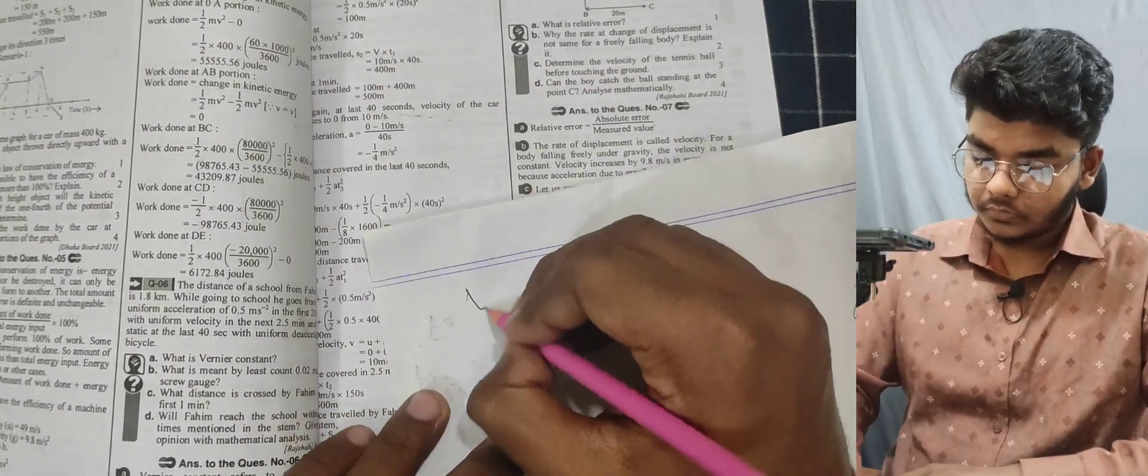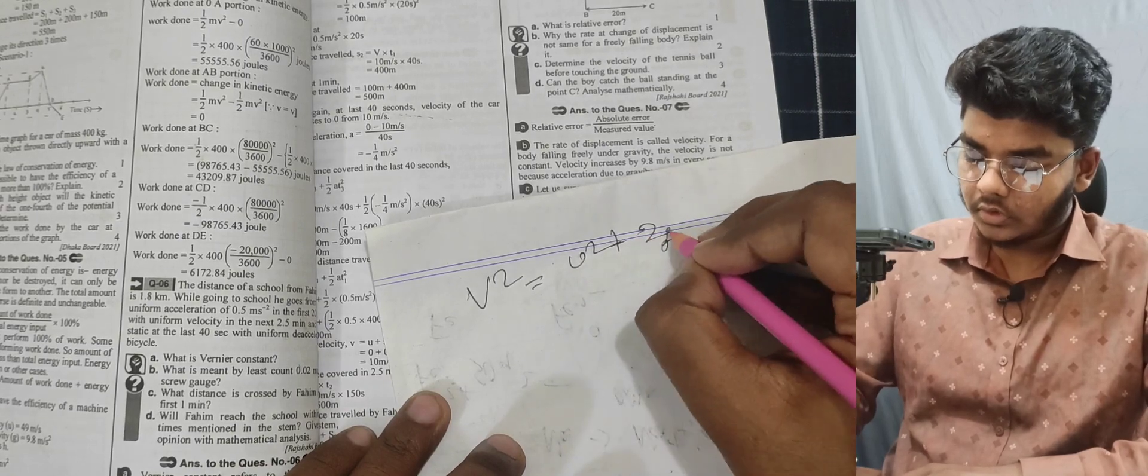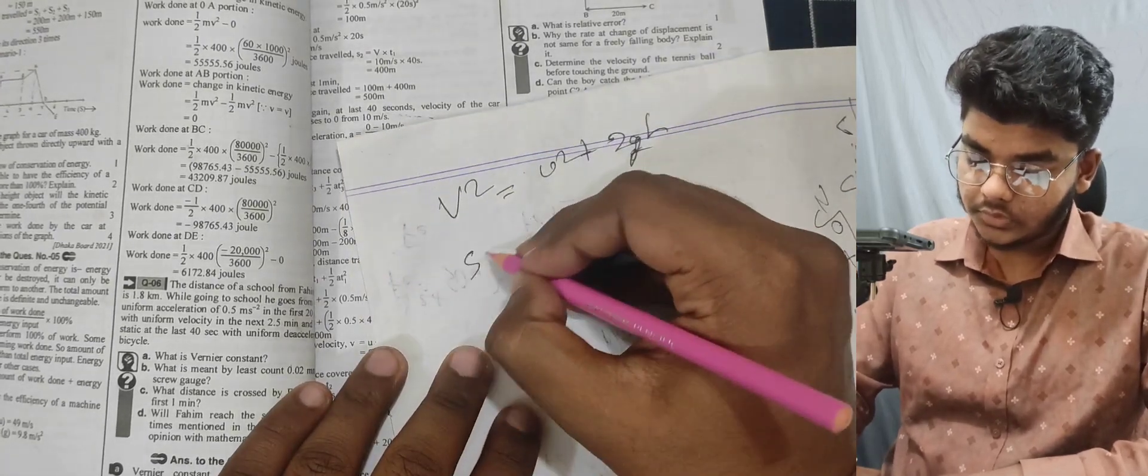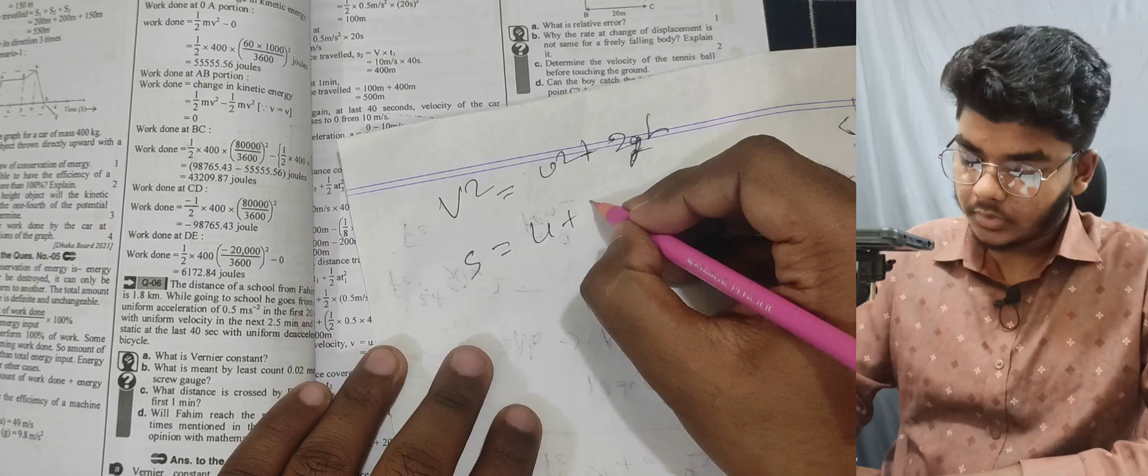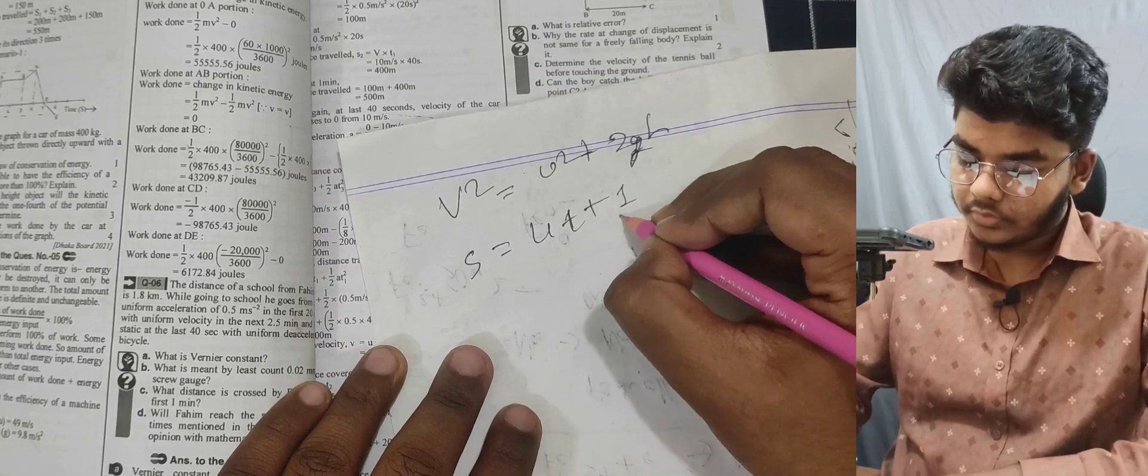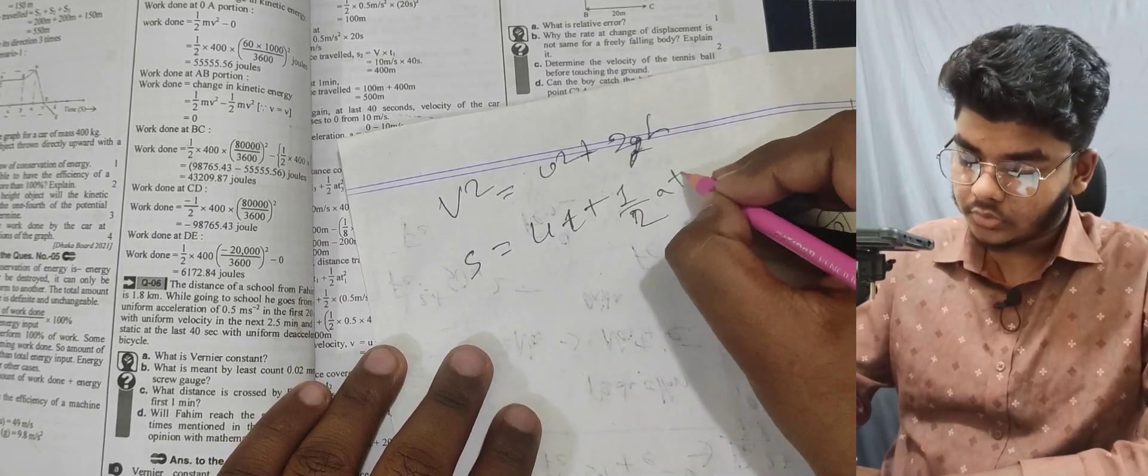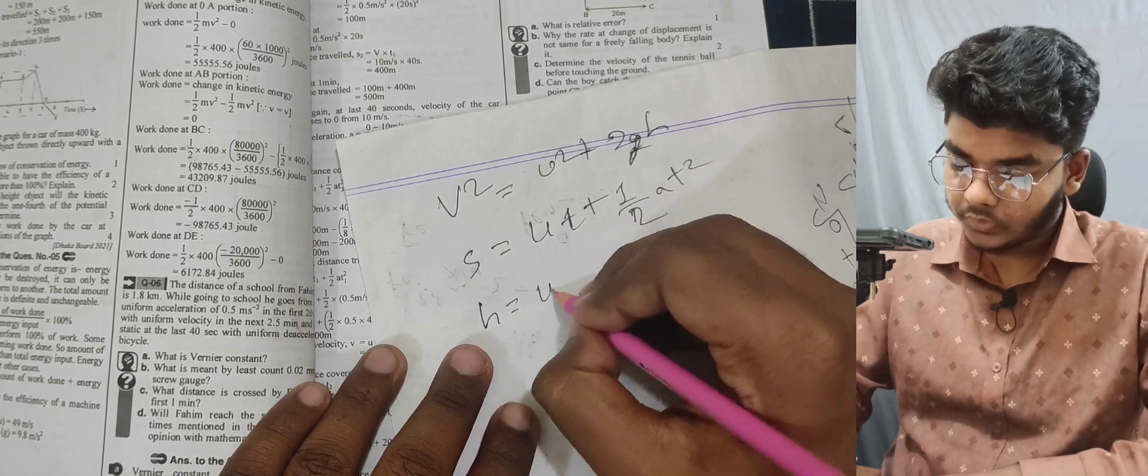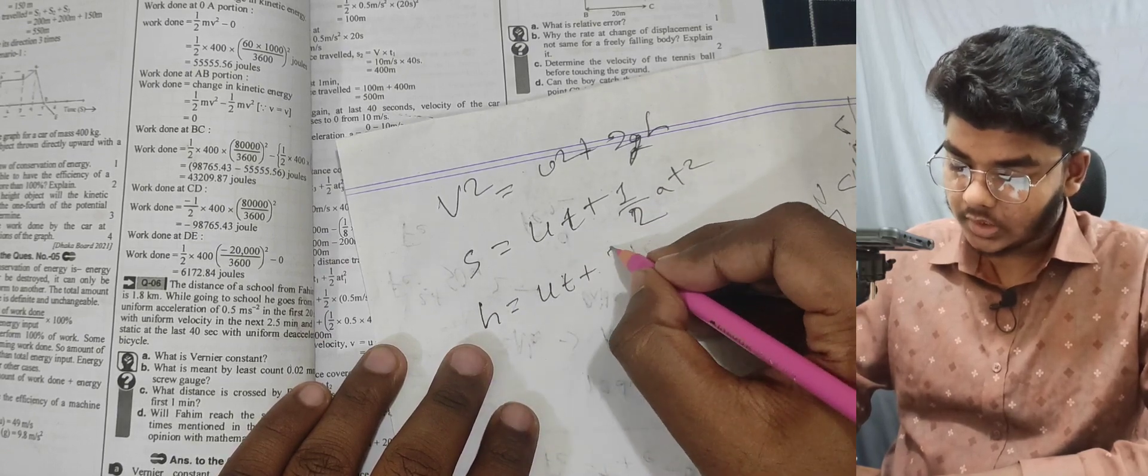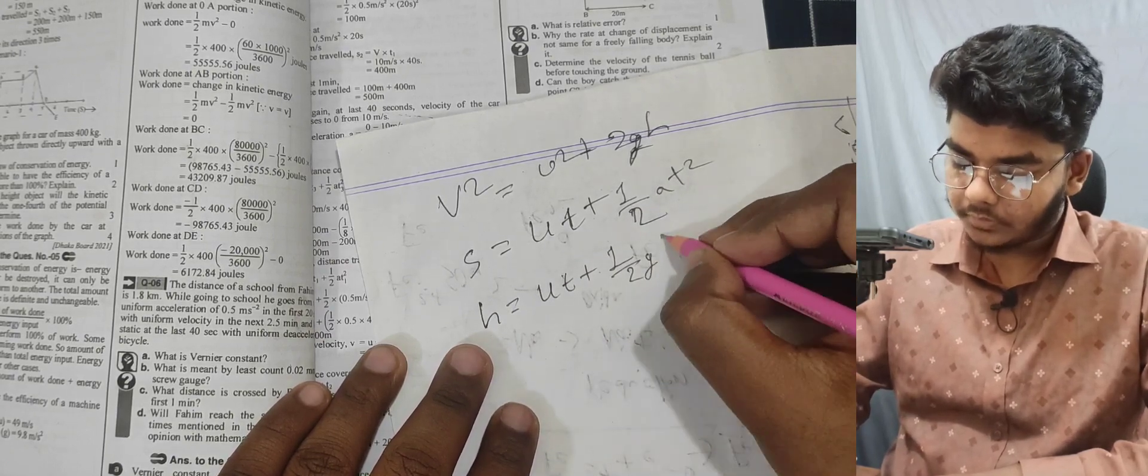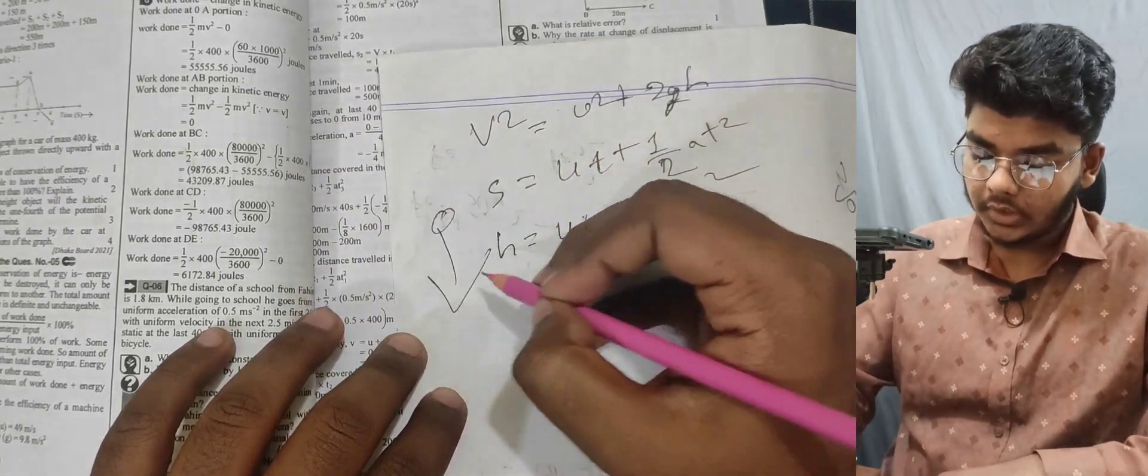Using the formula v² = u² + 2gh, and distance h = ut + ½gt². When it's falling from rest, we use these equations.